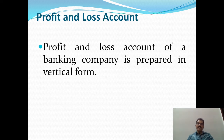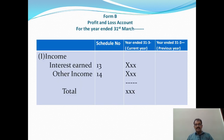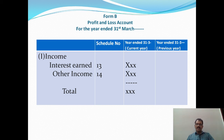The profit and loss account of a banking company is prepared in vertical form. The format of the profit and loss account has the heading 'Profit and Loss Account for the year ended 31st March'. The column headings are: Particulars, Schedule Number, Year ended 31st March (current year), and Year ended 31st March (previous year).